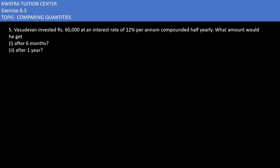Now moving to question number 5. It says Vasudevan invested Rs. 60,000 at an interest rate of 12% per annum compounded half yearly. What did they give you after 6 months?